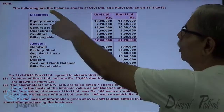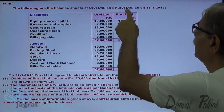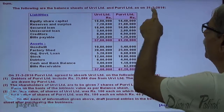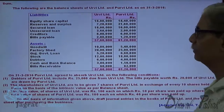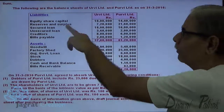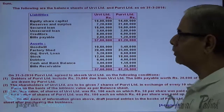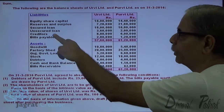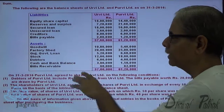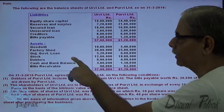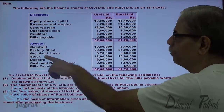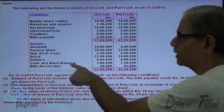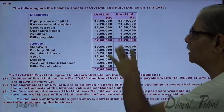Following are the balance sheets of Purvi Limited and Urvi Limited as on 31st 2016. The items include: equity share, reserve, secured loan, unsecured loan, creditors, bills payable, goodwill, factory share, government loan, investment, stock, debtors, cash and bank balance, and bills payable.